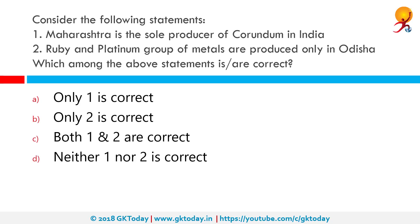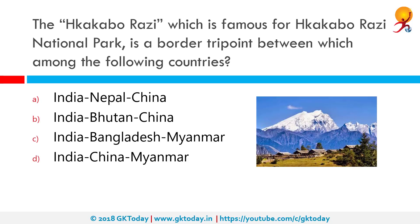Consider the following statements: one, Maharashtra is the sole producer of corundum in India; two, ruby and platinum group of metals are produced only in Orissa. Both statements are correct. Maharashtra is the sole producer of corundum and is the second largest producer of manganese after Orissa. The principal mineral-bearing belts are the Vidarbha area in the east and the Konkan area in the west. Orissa hosts the country's sole resources of ruby and platinum group of metals.